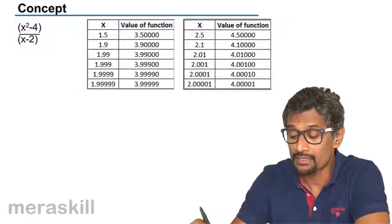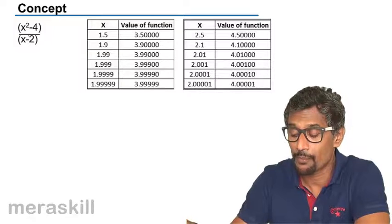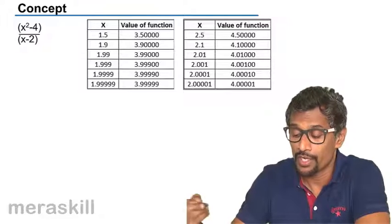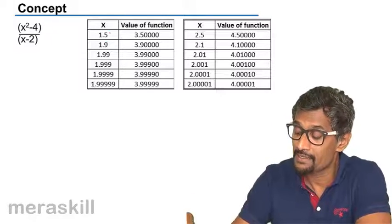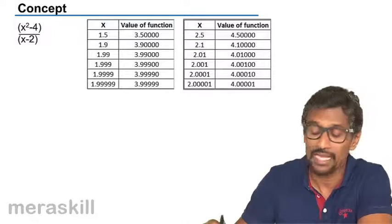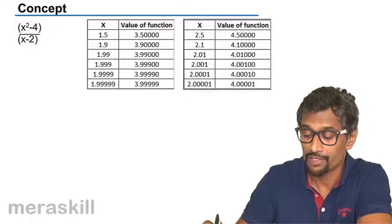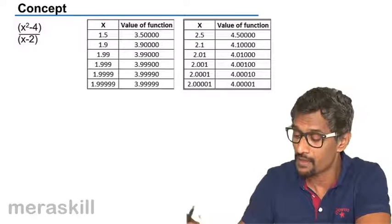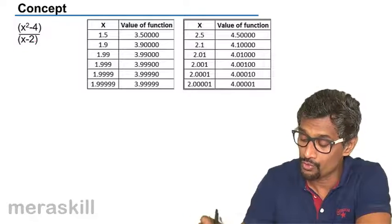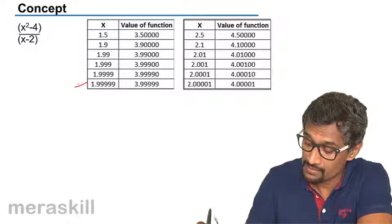So if you look at it this way, X squared minus four upon X minus two, if you put X as two over here, you will find that the function becomes meaningless. But if you consider values, if you consider these values, that is two,